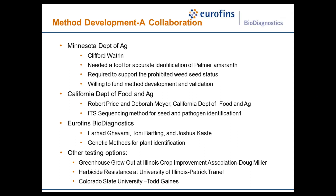We formed a team and Toni will talk about the technical details. Other testing options are available: Illinois Crop Improvement offers a greenhouse grow-out; there is also a test for herbicide resistance available at Patrick Crannell's lab at the University of Illinois; and Todd Gaines at Colorado State is working on SNP markers for species identification. We just wanted to mention those options are available, but now I'll turn it over to Toni to talk about the actual method.